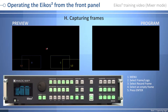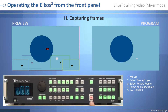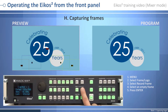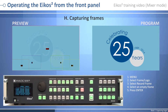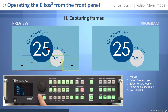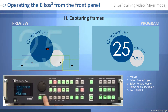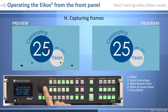Capturing frames: to capture a frame, display the exact content you want to save on one of your outputs at the exact resolution. You can use the Freeze button if you want. Press the Exit Menu button, select Frames/Logo, press Enter, then select Record Frame, press Enter, select a frame number, then press Enter and wait until the unit finishes the save.